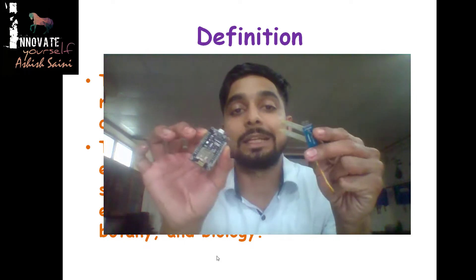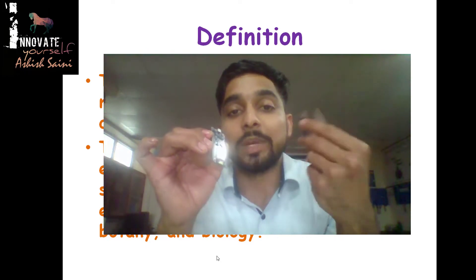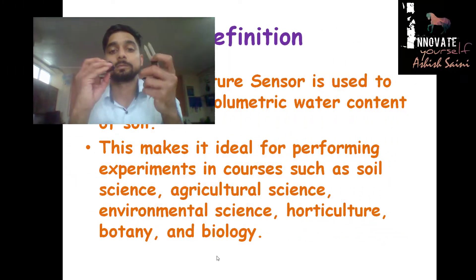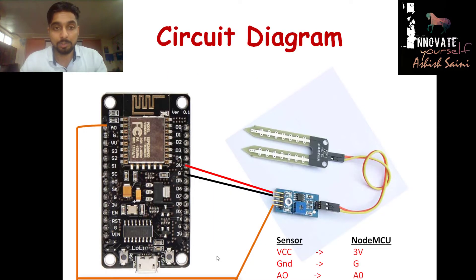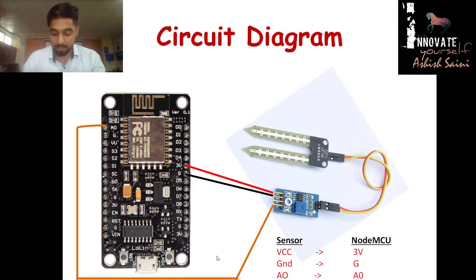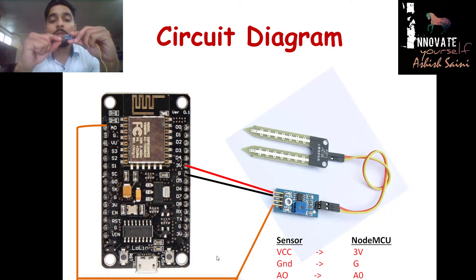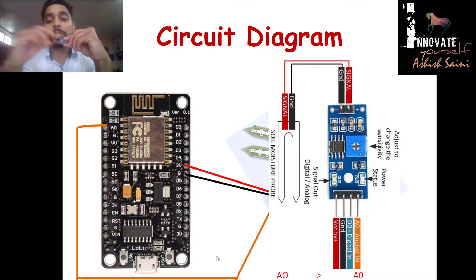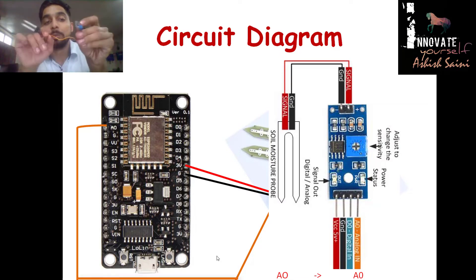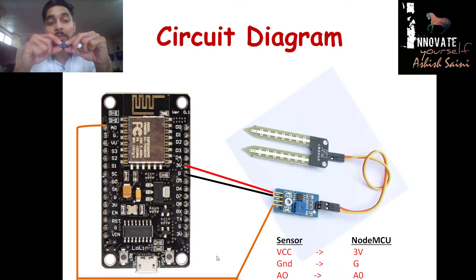Let's make the connections. I have a circuit diagram on screen — here you can see a NodeMCU connected to a soil moisture sensor. The soil moisture sensor module has four pins: VCC, Ground, DO (digital output), and AO (analog output). So you can get both digital and analog outputs from this module.